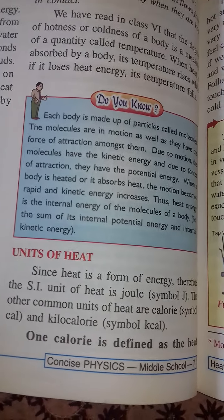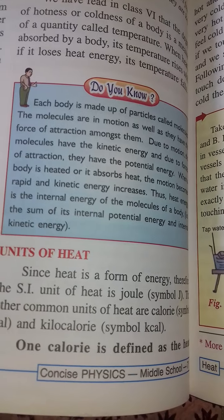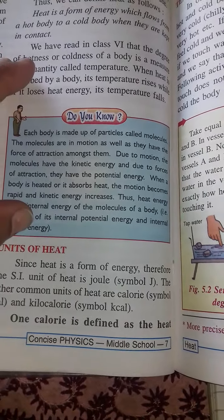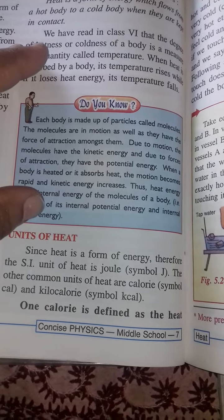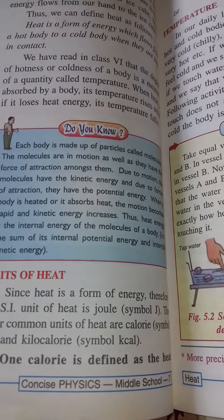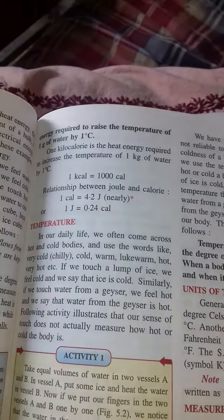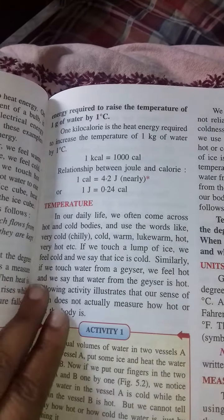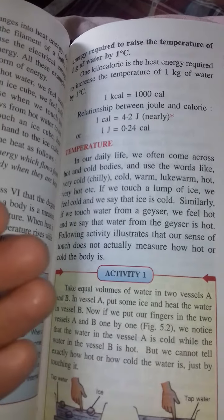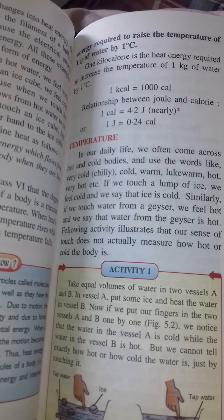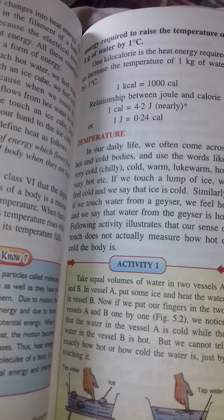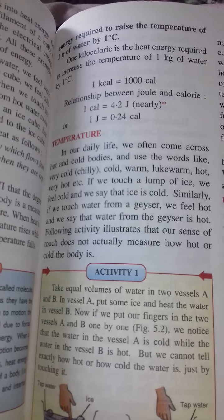Now comes the units of heat. Since heat is a form of energy, we are going to measure it in joules only — the symbol is capital J. Other units are also there, like 1 calorie. What is 1 calorie? One calorie is defined as the heat energy required to raise the temperature of 1 gram of water by 1 degree Celsius. And 1 kilocalorie is simply 1000 calories.